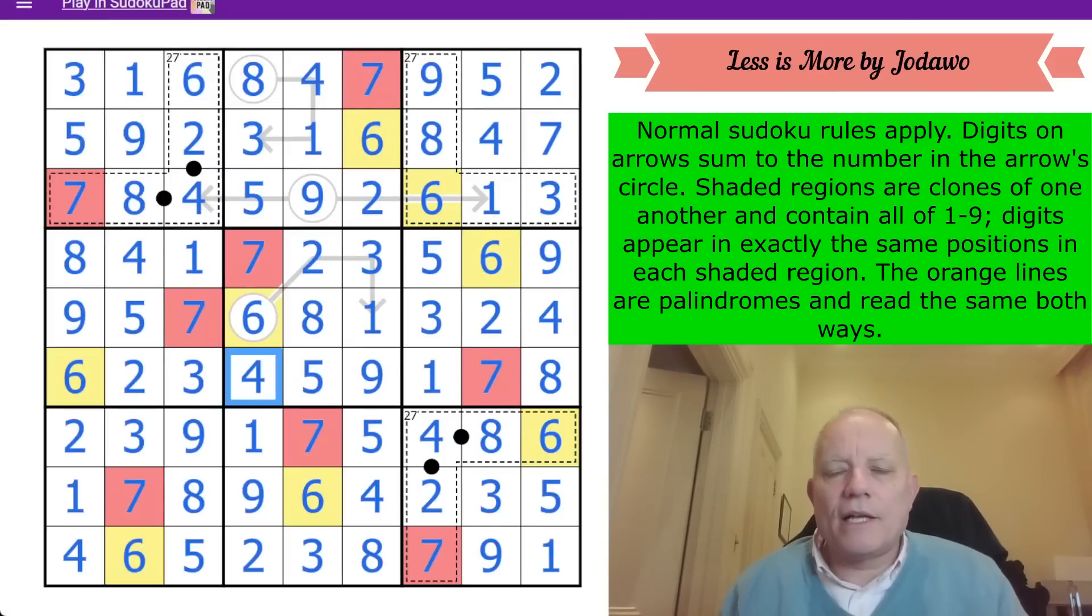Not too difficult, as promised, actually, by Jodawo. Less is more. I think that's been proved in that puzzle. Very few markings. Just 4 arrows, 3 cages and 4 Kropki dots. And yet, it's a beautiful unwinding of a puzzle. Really nice stuff from Jodawo. And we thank them for that. And we'll look forward to seeing you again tomorrow for more Sudoku. Thanks for watching, as always. Bye for now.